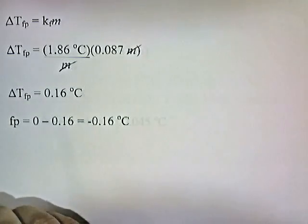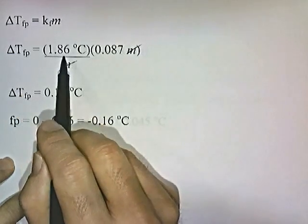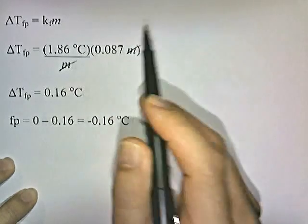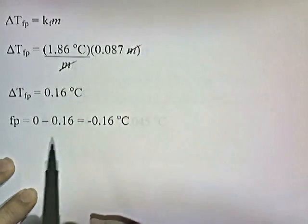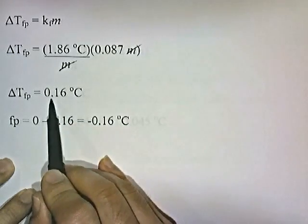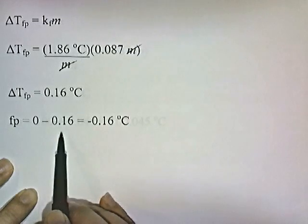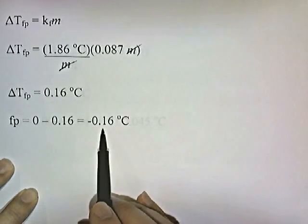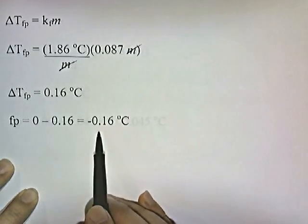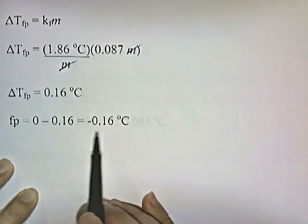The change in temperature of the freezing point is KF times m. KF is 1.86 degrees Celsius per molal, and the molality is 0.087. The molalities cancel. 1.86 times 0.087 is 0.16 degrees Celsius. When you add solute to water it lowers the freezing point, so the freezing point is 0 minus 0.16. The solution will freeze at negative 0.16 degrees Celsius — 0.16 degrees below zero.